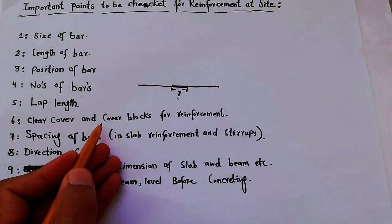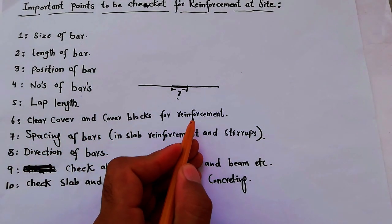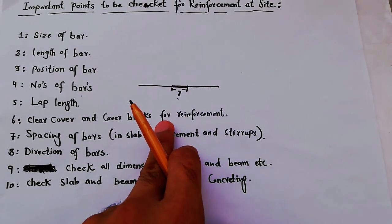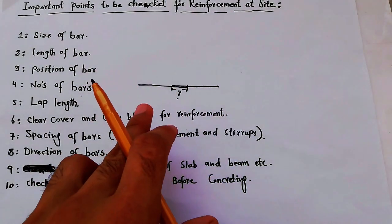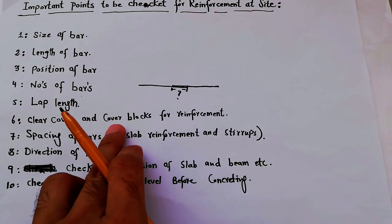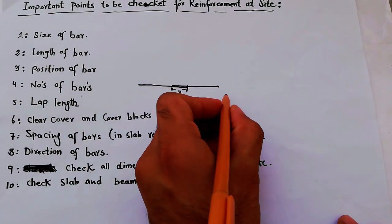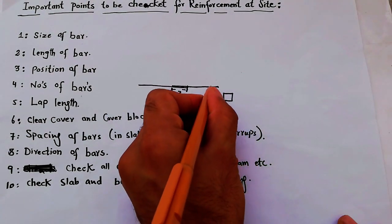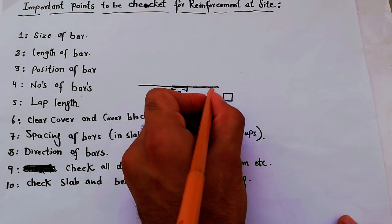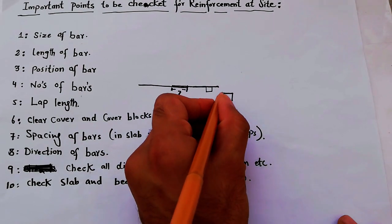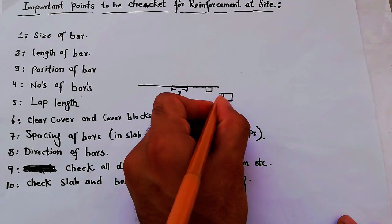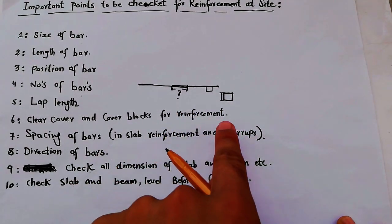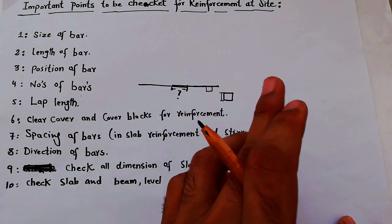Sixth, check the clear cover and cover blocks for reinforcement. You have to check the clear cover for slab, beam, column, etc., on site. Also check the cover blocks — sometimes we put blocks below the steel in the slab. You have to check the depth of the blocks for clear cover. This should be checked for slab, beam, column, etc.